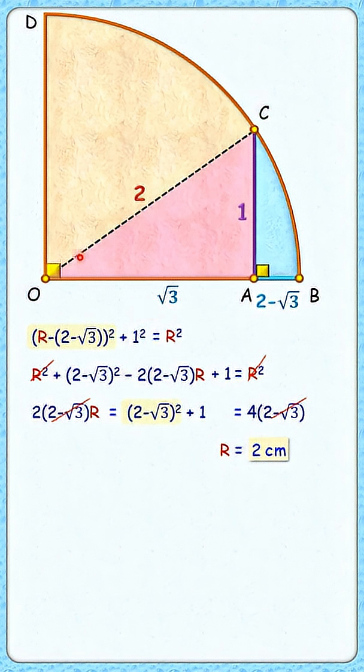Now in this triangle, if we assume this angle as θ degrees, we know that sin θ equals perpendicular upon hypotenuse, or 1/2. But 1/2 is nothing but sin 30°, so from here we get θ is 30 degrees.